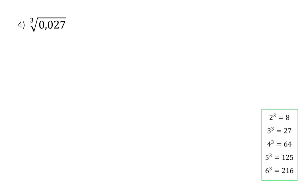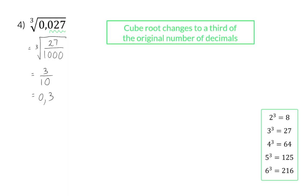After all the examples, you should be able to guess what happens with a cube root, but let's start off rewriting it as a common fraction of 27 over 1000. The cube root of 27 is 3 and that of 1000 is 10, so my decimal fraction is 0.3. Here you can see that our number of decimals has been divided by 3 to end with only one decimal.